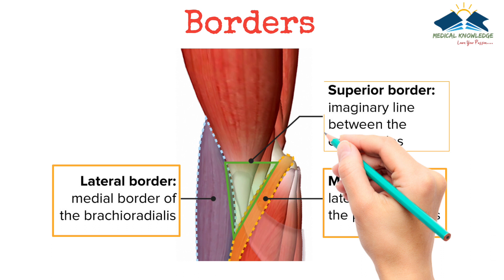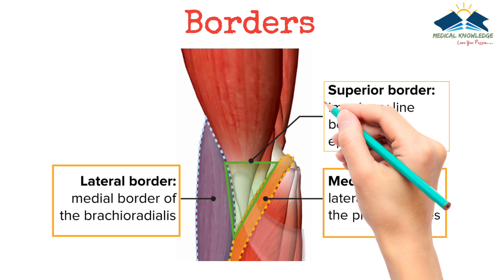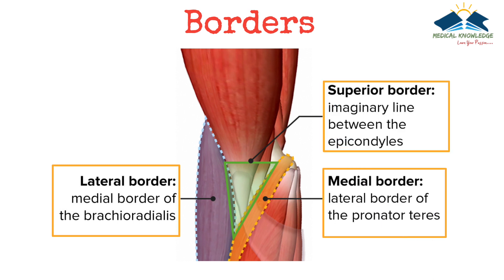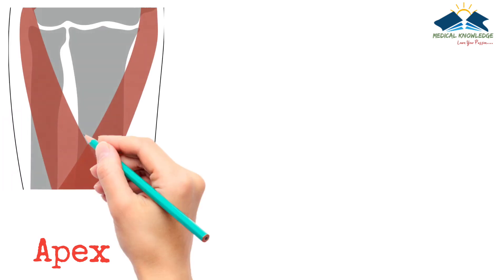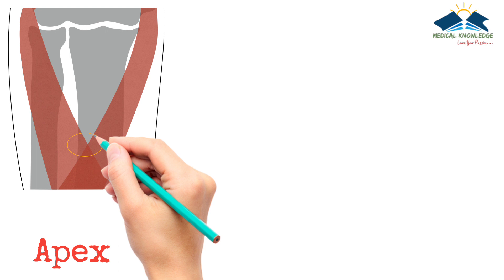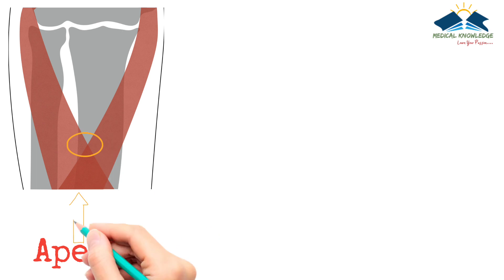The superior border, or base, is directed upwards and is represented by an imaginary horizontal line joining the two epicondyles of the humerus. The apex is directed downward and is formed by the crossing over of the brachioradialis and pronator teres muscles.